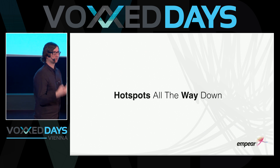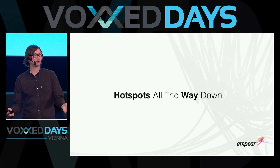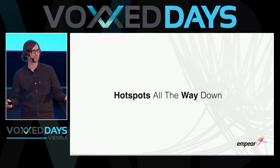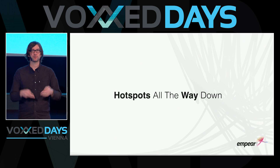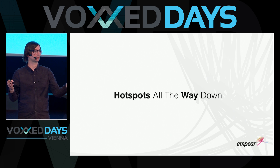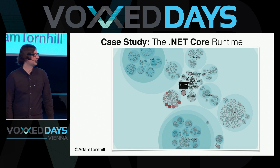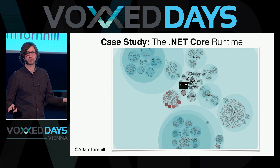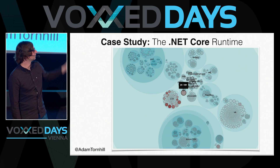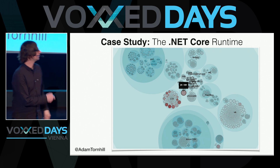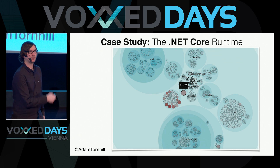Hotspots are a really good starting point, but sometimes they are not enough. Let me show you an example of when hotspots don't work. I'm going to switch to a codebase that many of you may actually have running on your laptops right now: the .NET Core runtime from Microsoft. The .NET Core runtime is a fascinating piece of software. When I did this hotspot analysis — about six or seven months ago, though it looks pretty similar today — most of the hotspots were in a cluster inside the JIT package, the just-in-time compilation support. Even more interesting is this satellite hotspot: a file called gc.cpp.